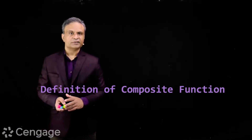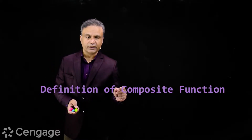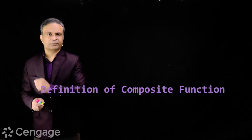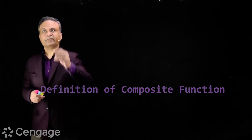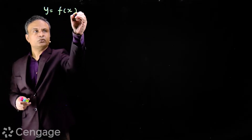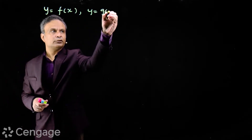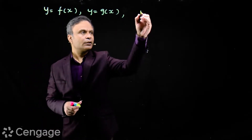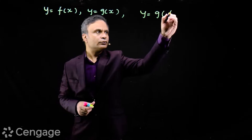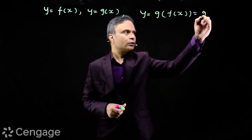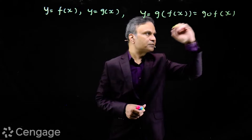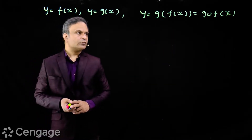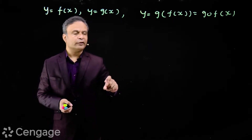Hello students. In this video we will understand how composite function is defined and what will be its domain and range with respect to the domain and range of participating functions. We have participating functions y = f(x) and y = g(x), and we define their composite function y = g(f(x)), or g-of-f of x. Clearly, output values of function f(x) will be input values to function g(x).